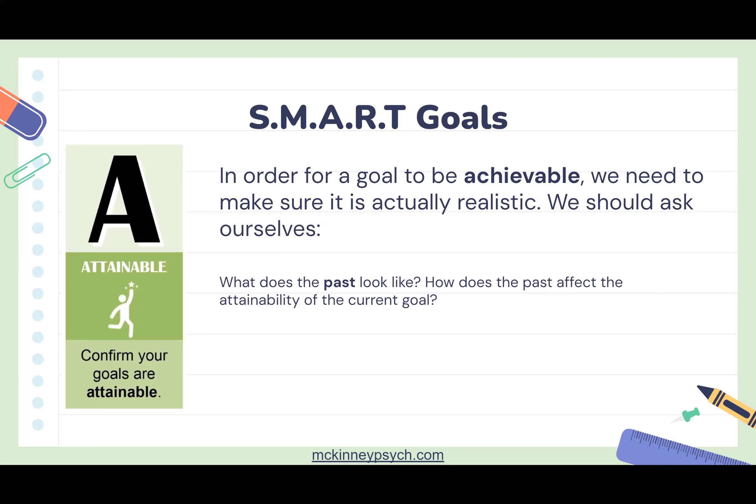We want to take into account our past track record, current motivation, and any new skills we're going to try. Maybe in the past your track record wasn't good, but now you have really strong motivation — so find that balance in self-reflection. Here's an example with a final grade calculator: let's say you wanted to get a 90 on your final, but your overall grade is only a 60, and the final is worth 25%.